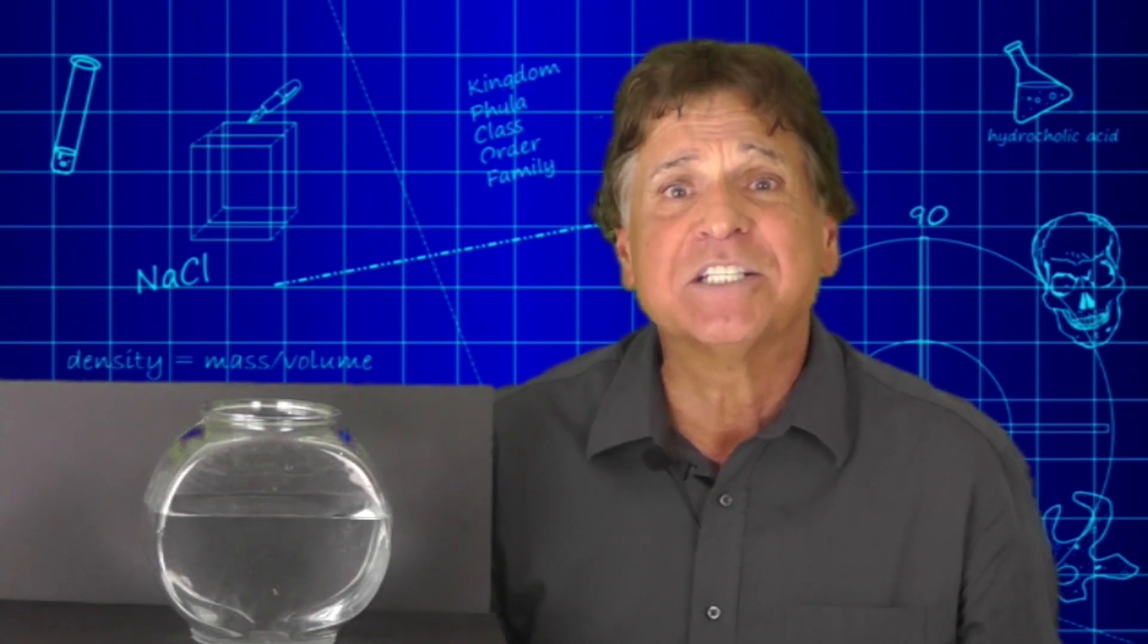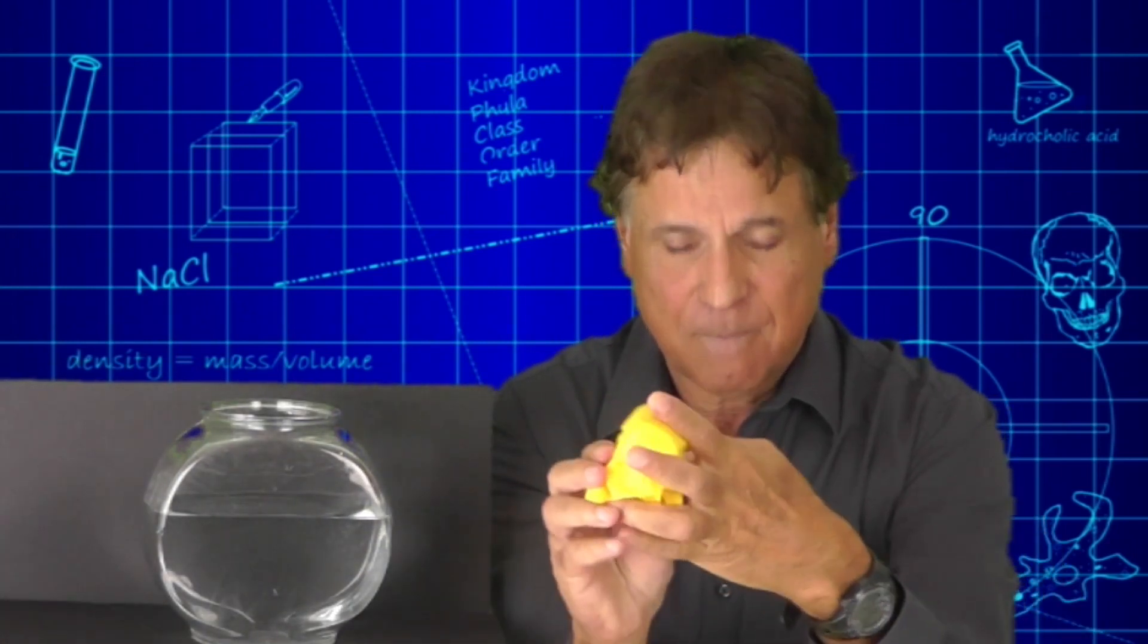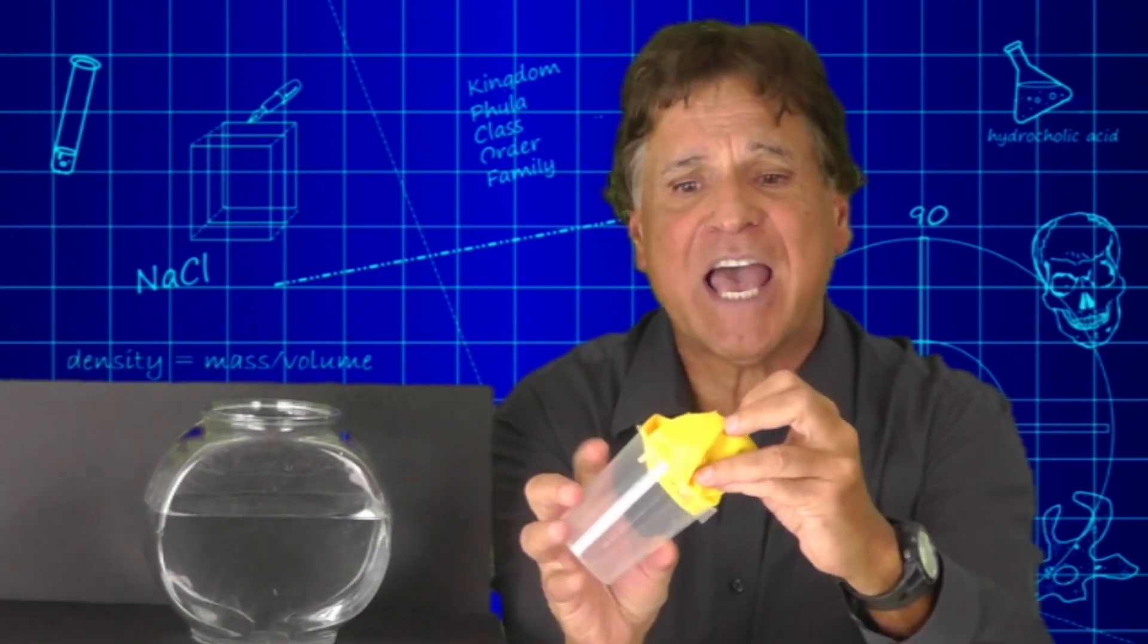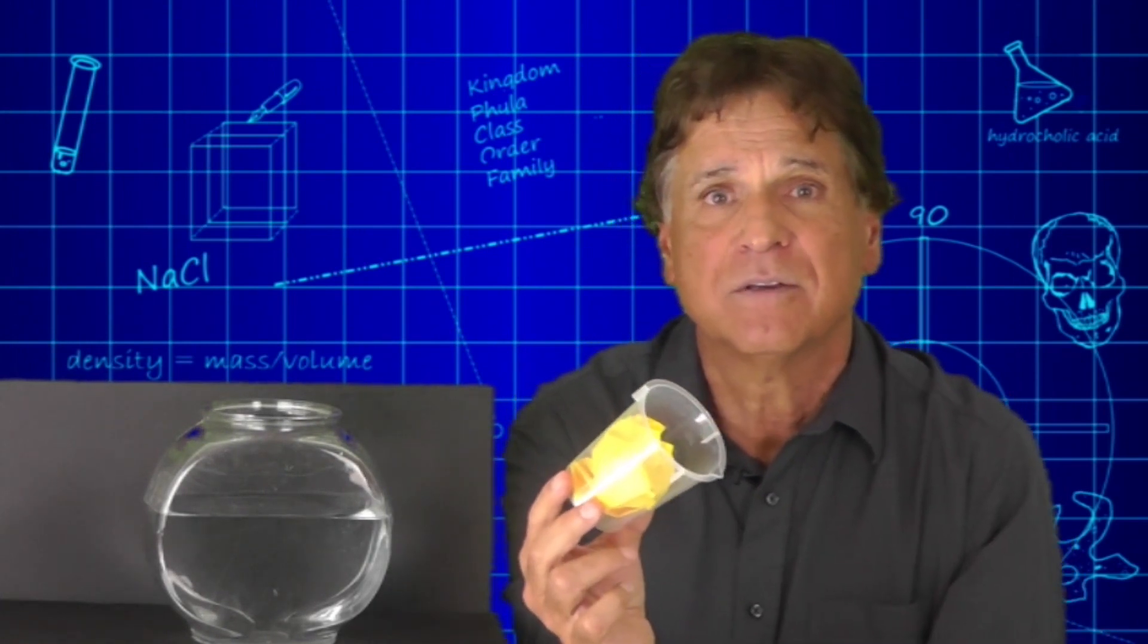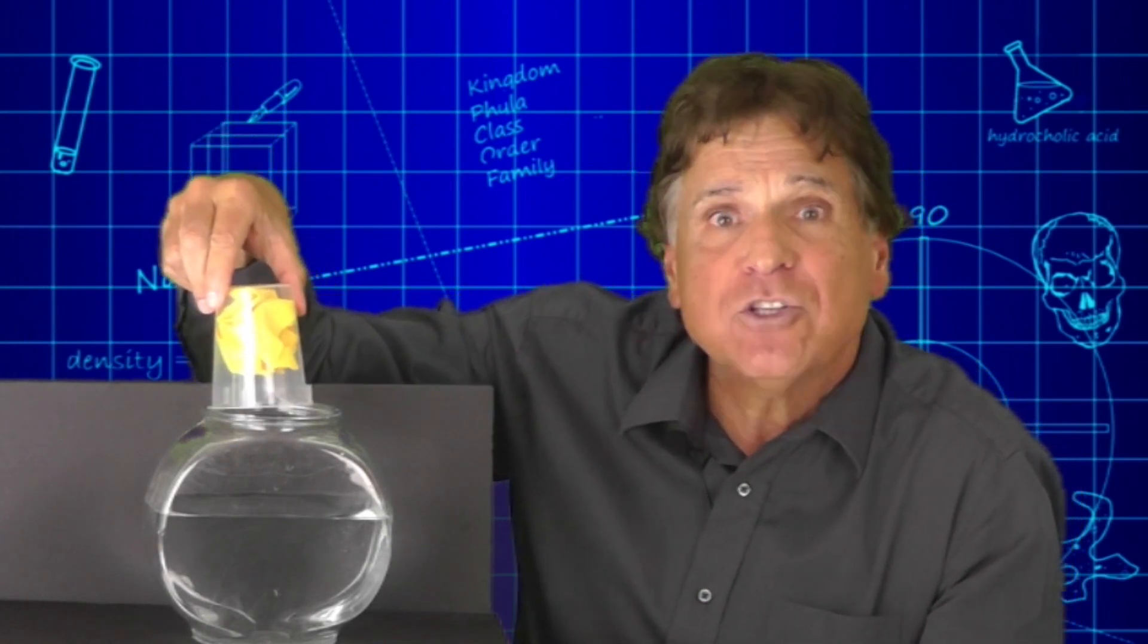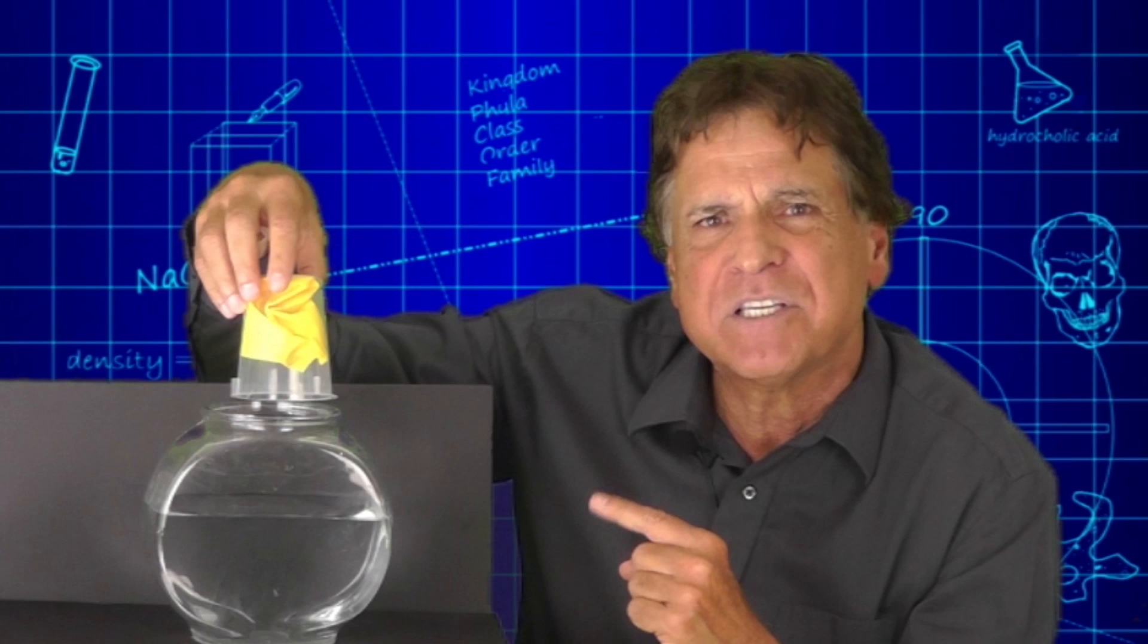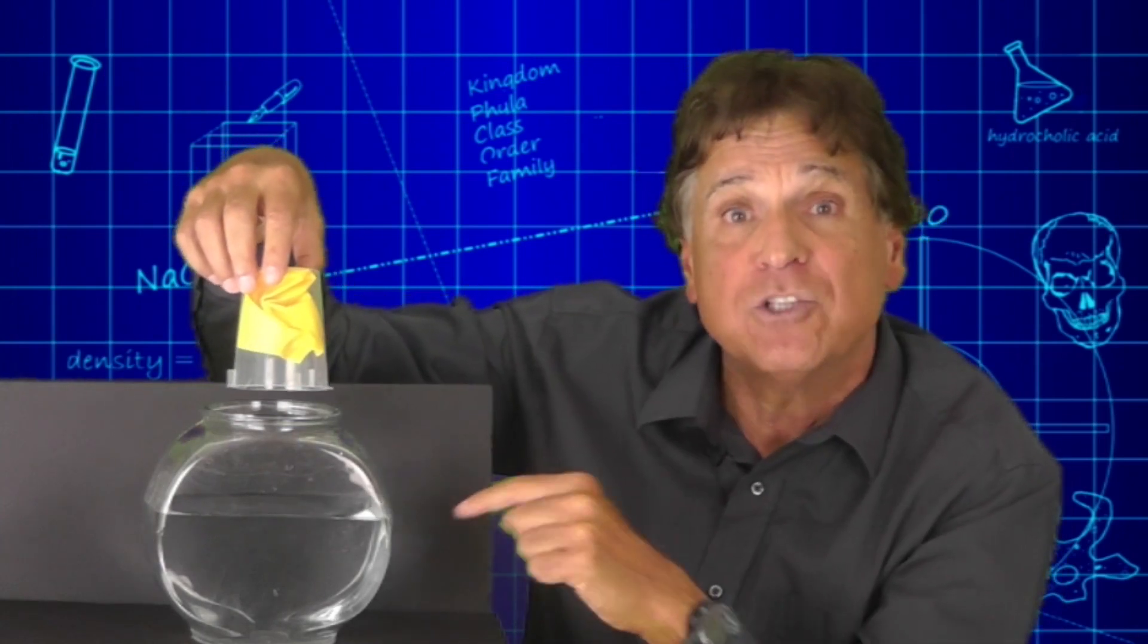First step is to take that sheet of paper and crumple it up into a ball and place that into the cup just like this. Then, before inserting the cup into the water, ask the students: what do they think might happen to that paper if I place the cup into the water?